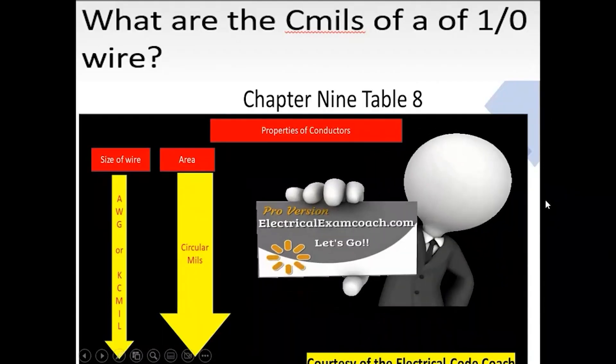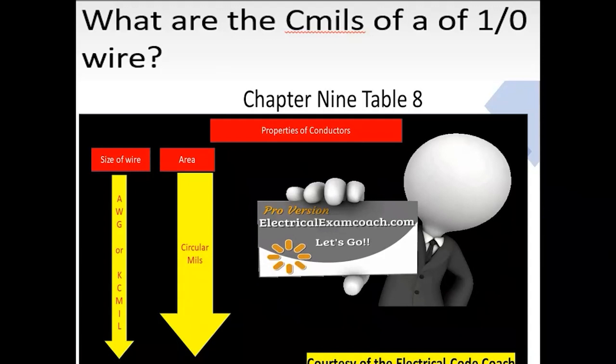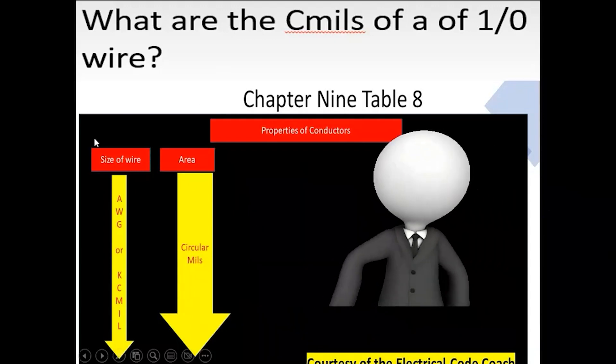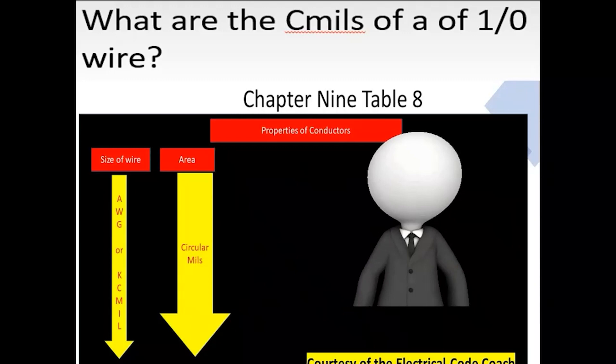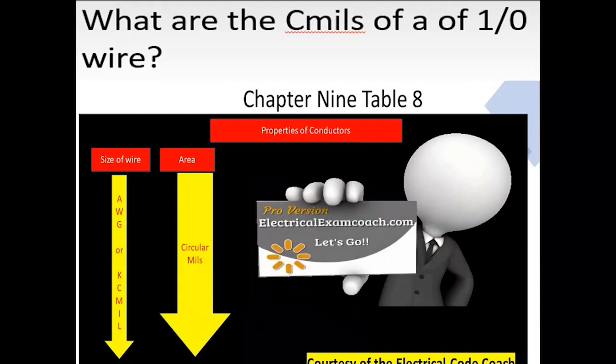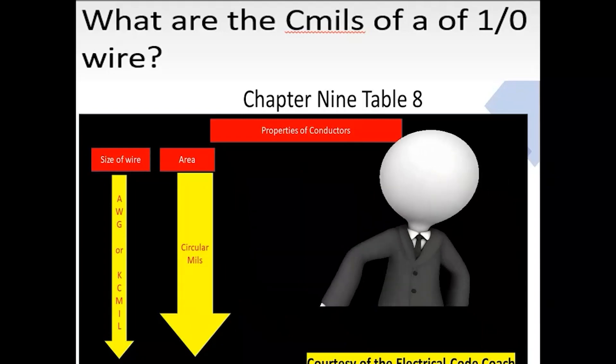And we're going to find the answer to this in Chapter 9, Table 8. When we get there, we're going to start on the left-hand side and find our size of wire. Then we're going to come over and we're going to cross over to our circular mills. And when we're going to use things like this is when we're doing voltage drop calculations, or if we're paralleling wires when we're doing grounding conductors.